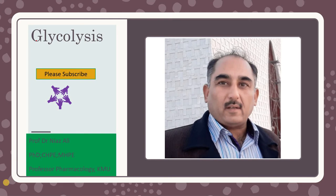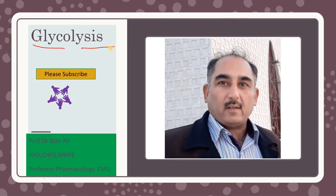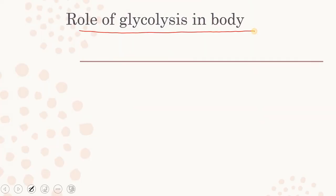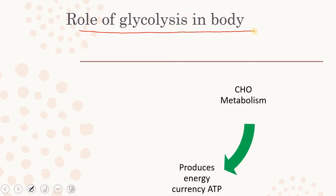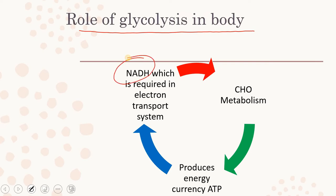Today we will be discussing glycolysis. You are quite familiar that glycolysis comes from the word 'glyco' or glucose, and 'lysis' meaning breakdown. It relates to carbohydrate metabolism. The role of glycolysis is to help in carbohydrate metabolism — it produces energy currency like ATP (adenosine triphosphate) and also NADH from NAD+, which is required in oxidative phosphorylation or the electron transport system.